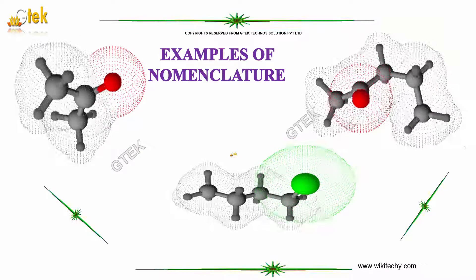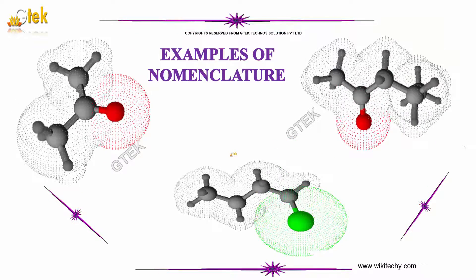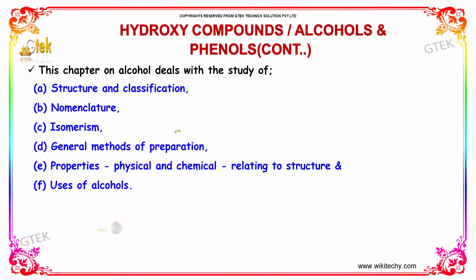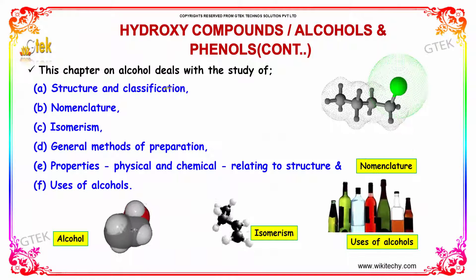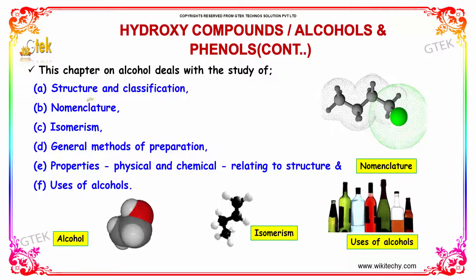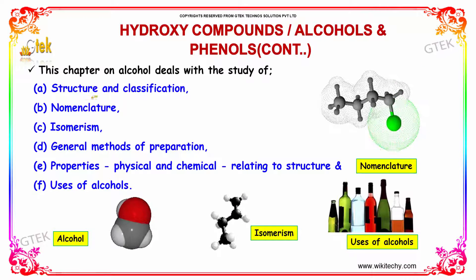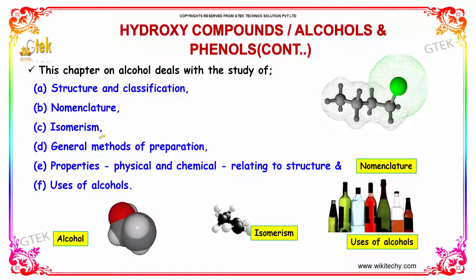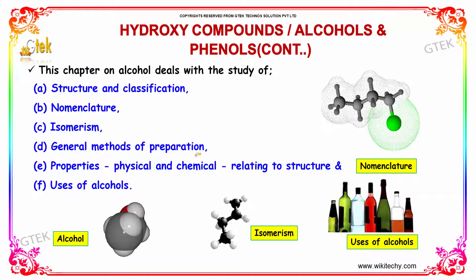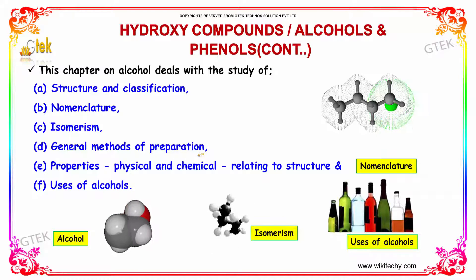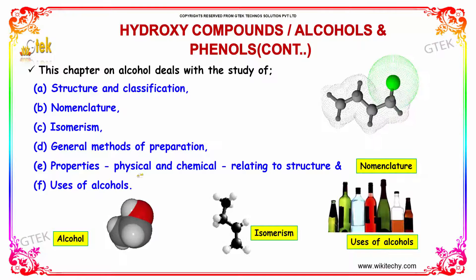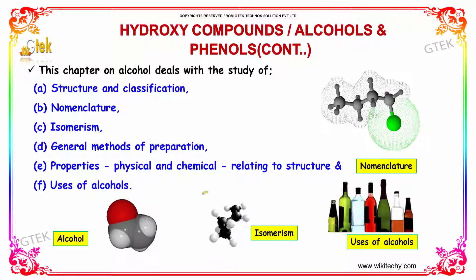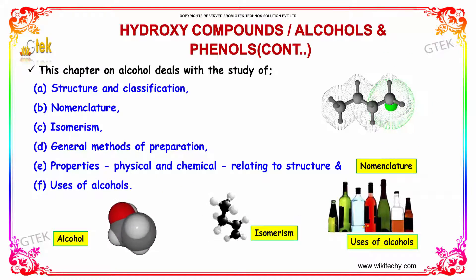Examples of Nomenclature of Hydroxy Compounds. This chapter deals with the study of structure and classification, nomenclature, isomerism, general methods of preparation of hydroxy compounds, their physical and chemical properties, and uses of alcohols.